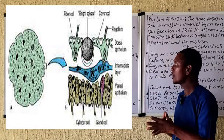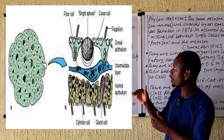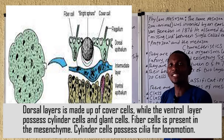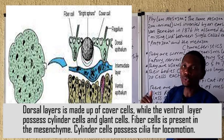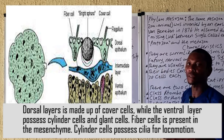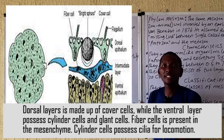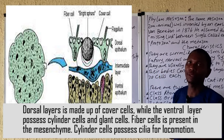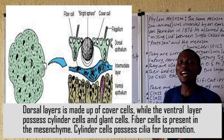Looking at the diagram closely, you observe that there are just four types of cells in the body of Placozoa. In the upper layer they have the cover cell. In the bottom layer they have the cylinder cell as well as the gland cell. In the intermediate layer they have the fiber cells. So we have four types of cells: the gland cell, the cylinder cell, the cover cell, and the fiber cell.